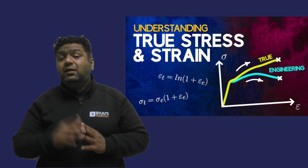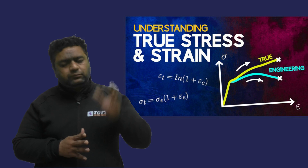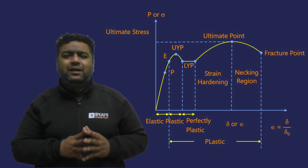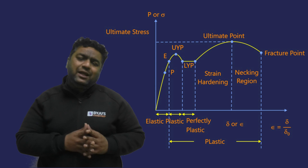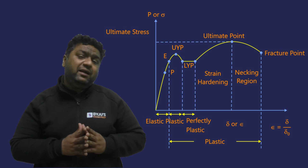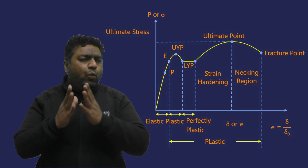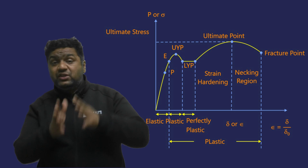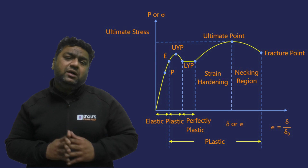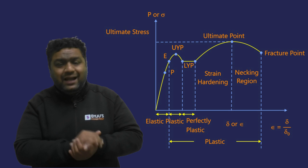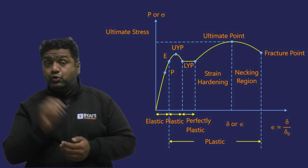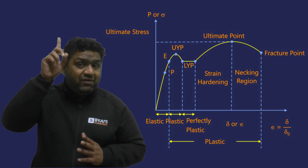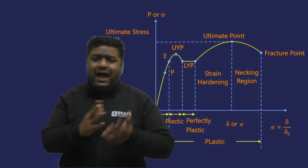Similarly, engineering strain is defined as change in length per unit original length. Although area and length change with time, we take original values, so they work like a scale factor. That is why plotting a load-deformation diagram or a stress-strain diagram gives the same shape, just with some scaling. Stress is placed on the y-axis and strain on the x-axis because stresses arise when strains are restricted — stress is a function of strain. If strain is not induced, there is no stress. So stress is shown as y, a function of x (strain).